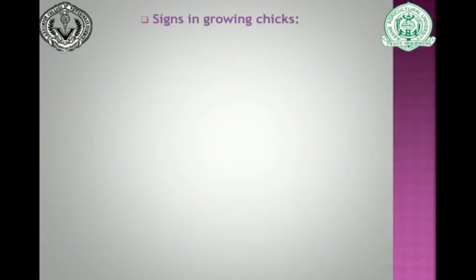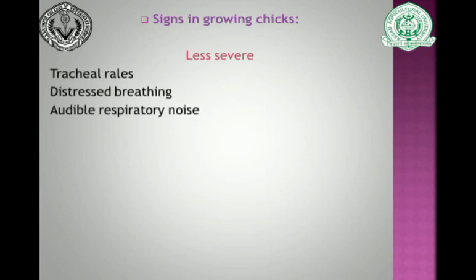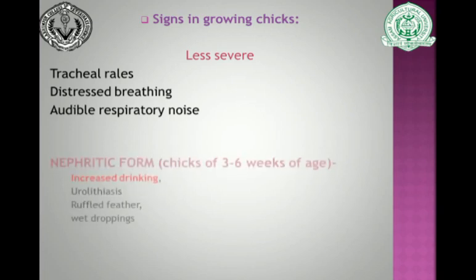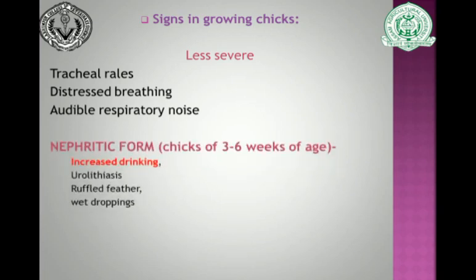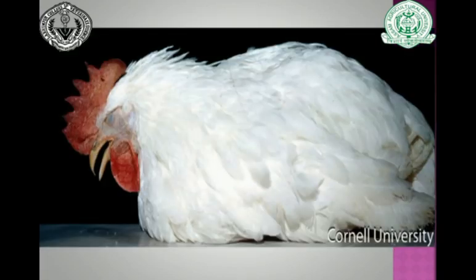The second group is the growing chicks, where signs are less severe. They show respiratory signs like tracheal rales, distressed breathing, and audible respiratory noise. The nephritic form can also be seen in this group, typically in chicks of three to six weeks of age, exhibited by increased drinking, urolithiasis, ruffled feathers, and wet droppings. Images show chickens with dyspnea, gasping, and ocular symptoms including excessive tear production leading to feather loss.